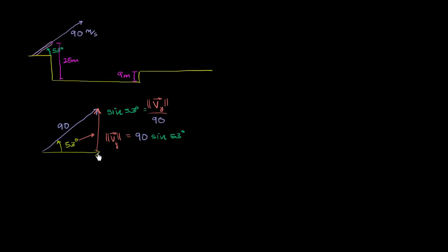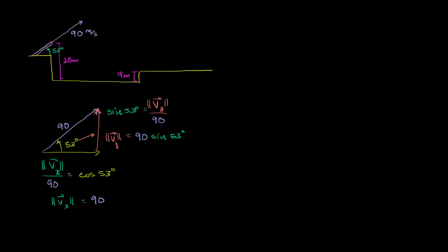If we want to do the horizontal component, the horizontal side is adjacent to this angle. Using SOHCAHTOA, cosine is adjacent over hypotenuse. So the horizontal component of our velocity in the x direction over 90 is equal to the cosine of 53 degrees. Multiply both sides by 90, and you get that the horizontal component is equal to 90 times the cosine of 53 degrees.